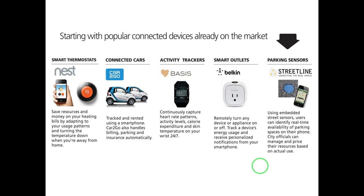Car2Go handles billing, parking and insurance automatically. The third use case is activity trackers, which continuously capture heart rate patterns, activity levels, calorie expenditure and skin temperature on your wrist on a 24/7 basis. The next use case is smart energy management through smart outlets provided by Belkin, where you can remotely turn any device or appliance on and off, track device energy usage, and receive personalized notifications through your smartphone. The last use case is Streetline, which uses embedded street sensors so users can identify real-time availability of parking spaces on their phone.